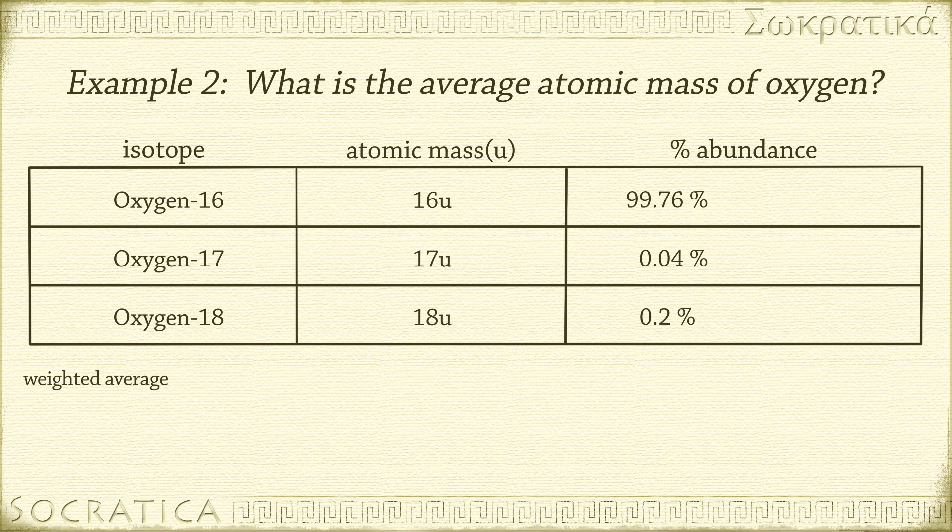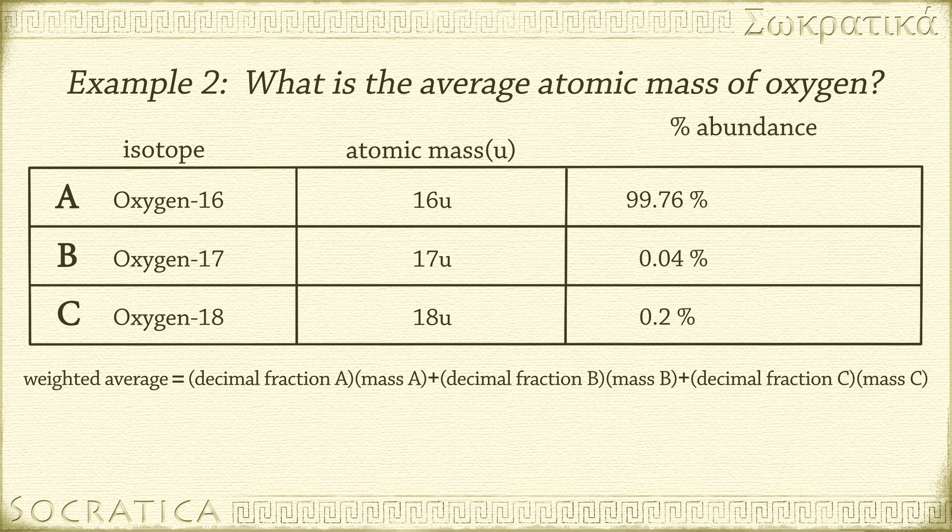The weighted average of the three isotopes, let's call them A, B, and C, will be decimal fraction A times mass A plus decimal fraction B times mass B plus decimal fraction C times mass C. Convert the percentages to decimal fractions by dividing by 100%: 0.9976, 0.0004, 0.002.